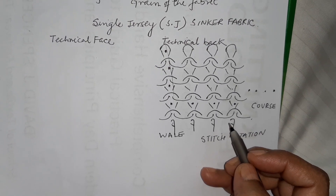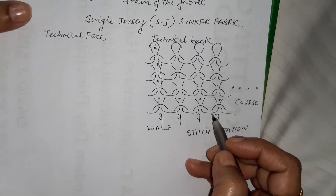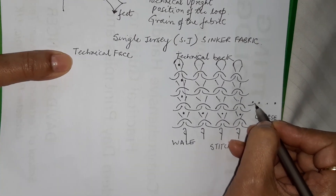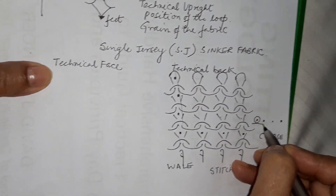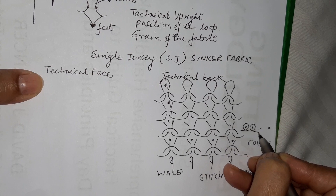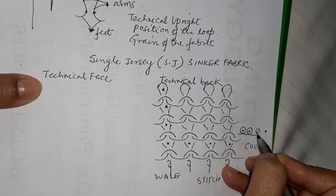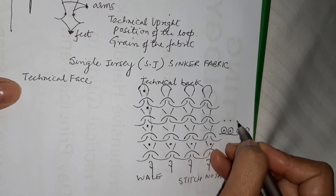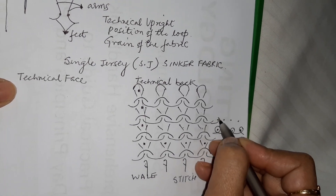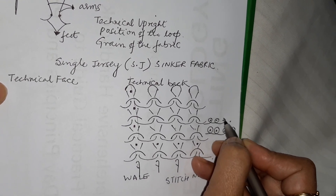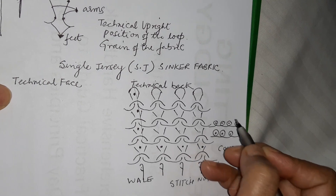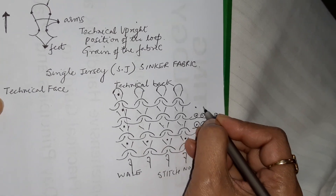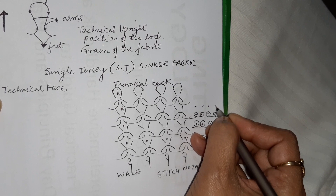When we draw stitch notations for the technical back, we put the loops in the upward direction. Draw it slowly with me. As many courses as you have, that many stitch notations you should draw — so for four courses I'm going to draw four stitch notations like this.